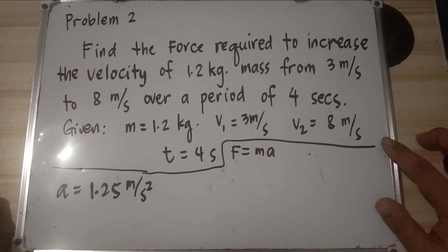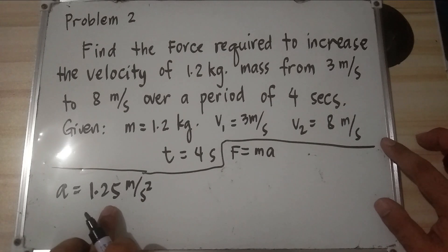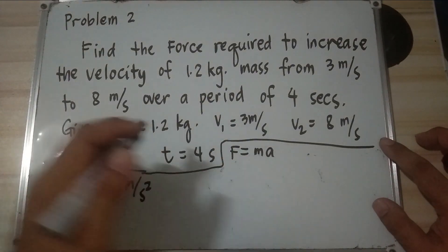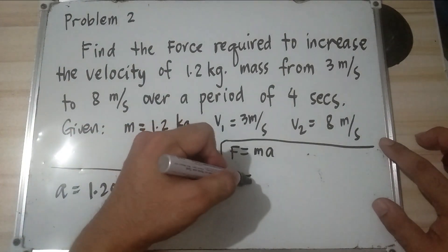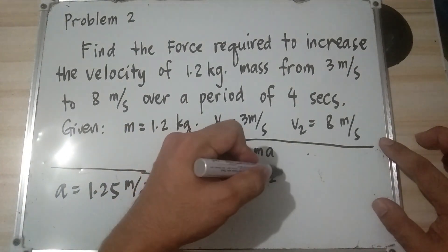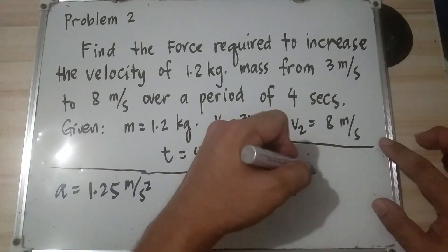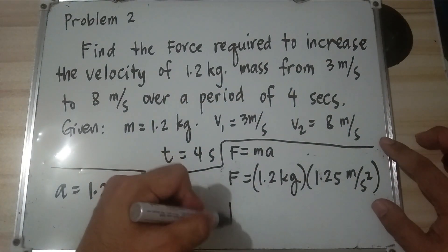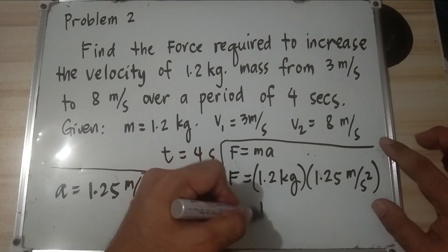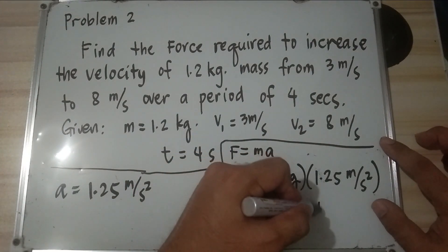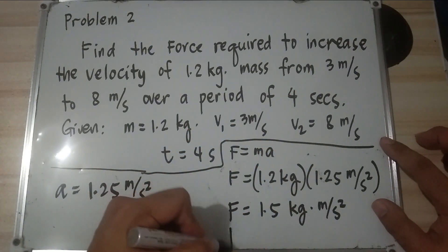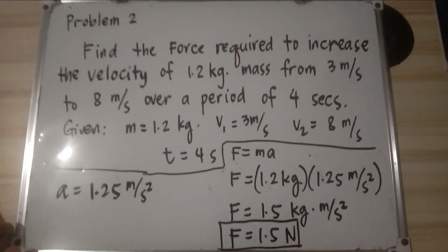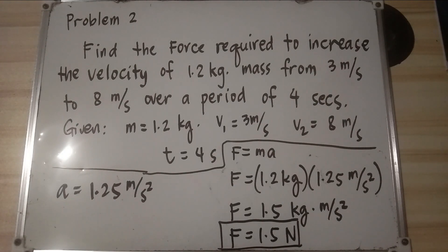Now that we have the acceleration of 1.25 meters per second squared, we plug into F equals MA. F equals 1.2 kilograms times 1.25 meters per second squared. The product is 1.5 kilogram-meter per second squared, or 1.5 newtons. Therefore, the force required is 1.5 newtons.